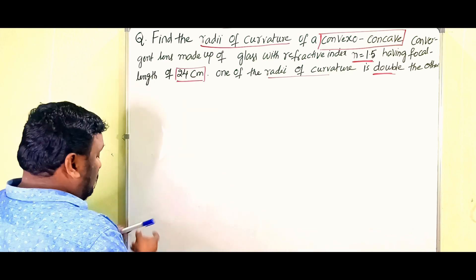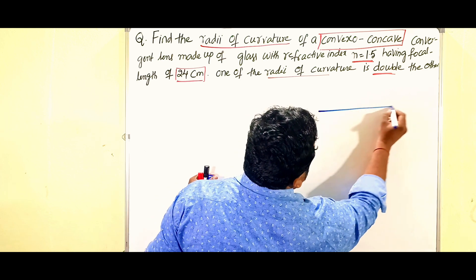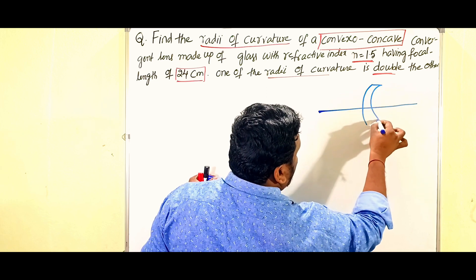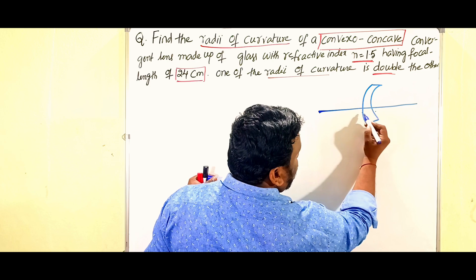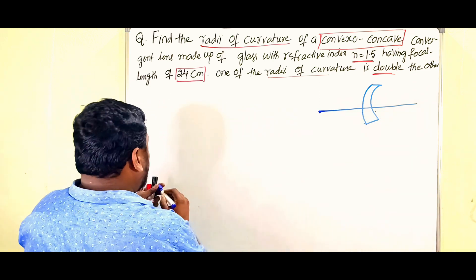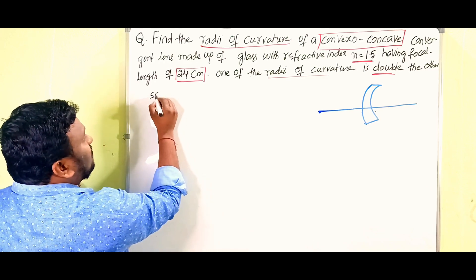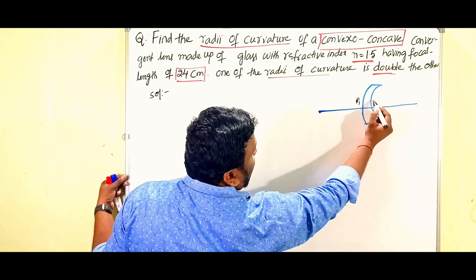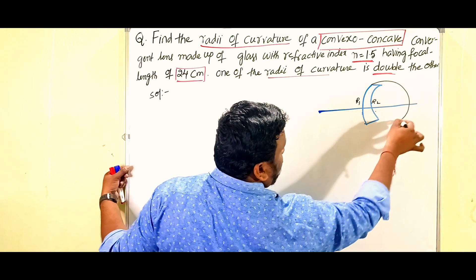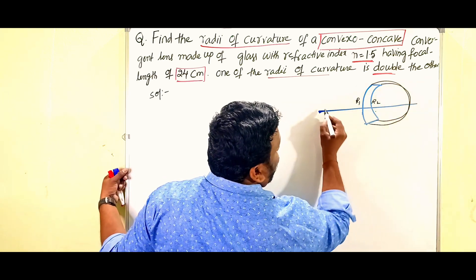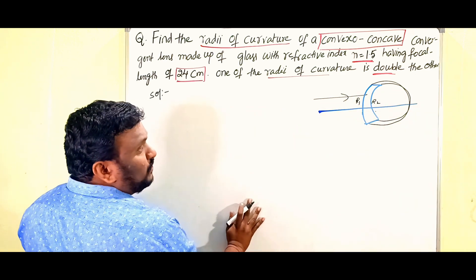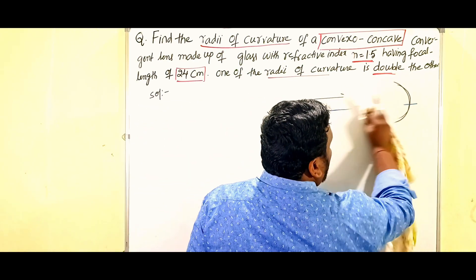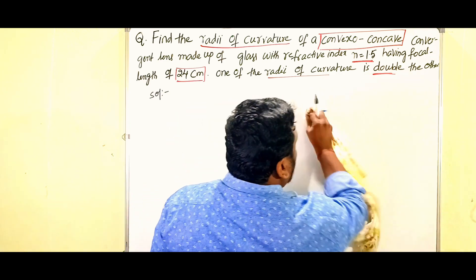The first lens given is convex-concave. For a convex-concave lens, r1 is positive and r2 is also positive. This is r1 and this is r2. You have to remember that in this case both r1 and r2 are taken as positive. So we are going to use the lens maker's formula.